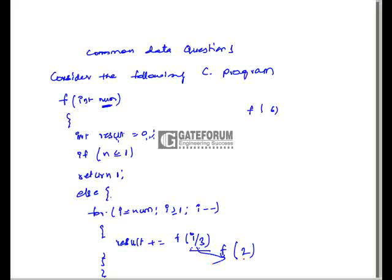Here i is six, so f(6/3) equals f(2). It will call f(2). Since n equals two is greater than or equal to one, the if condition fails and it goes into the else part. Now i becomes two, and it will again call f(2/3), which is f(0), repeatedly tracing through the recursion.